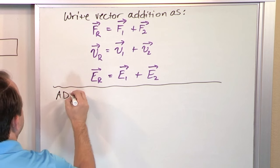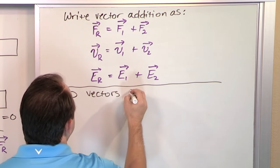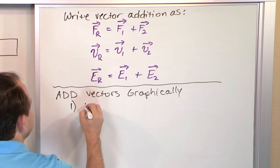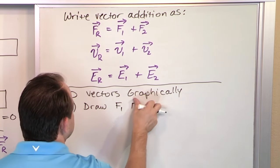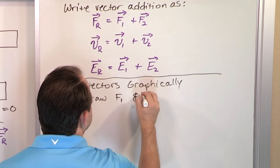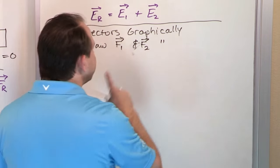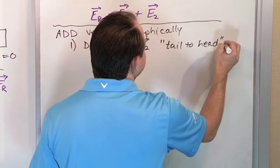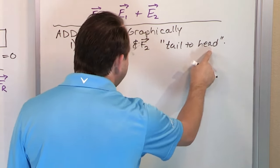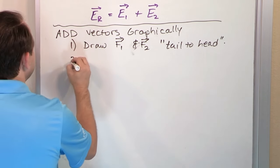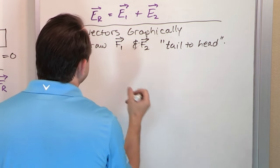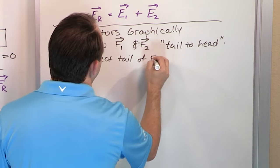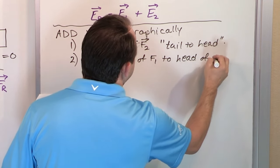Here is the general recipe for adding vectors graphically. Step one: you draw the two different vectors F1 and F2, and you align them up tail to head — the tail of one arrow to the head of the other arrow. Step two: you connect tail of F1 to head of F2. It's like kindergarten — you literally connect the dots.